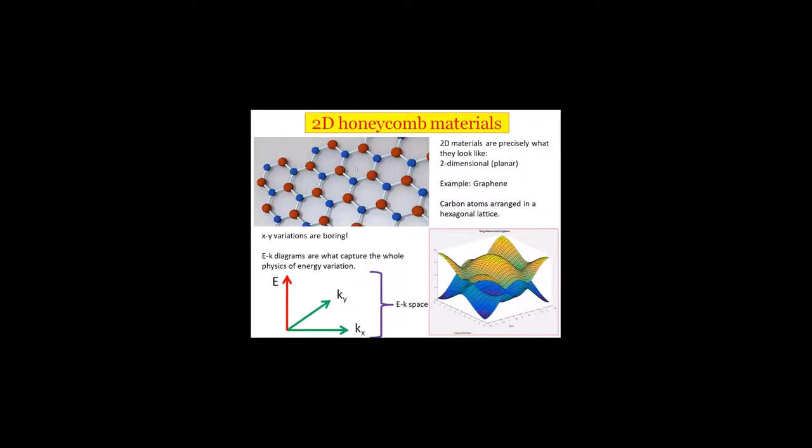These are the 2D honeycomb systems—hexagonal cells arranged repetitively. For example, graphene, which everyone must have heard about. It's carbon atoms arranged in a hexagonal lattice. But XY variations are boring, so we analyze things in the E-K domain, energy versus momentum. Since it's planar, it has KX and KY momenta. We plot how the energy of this graphene sheet varies with KX and KY. This is what I get in MATLAB.